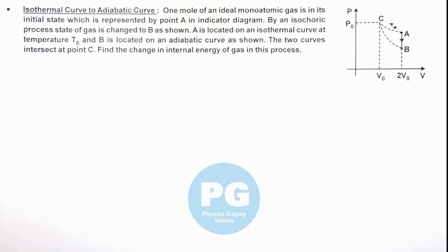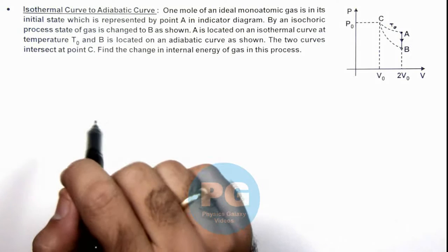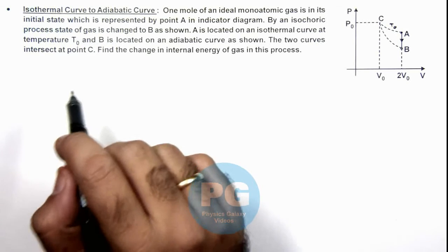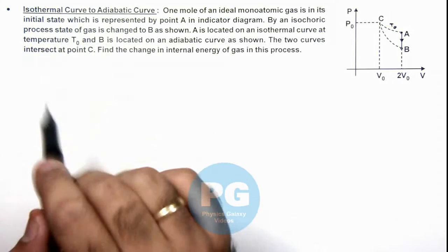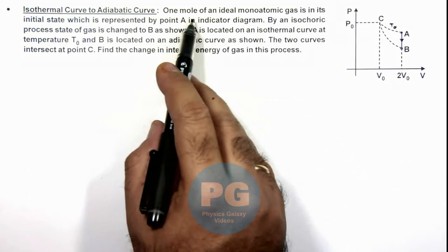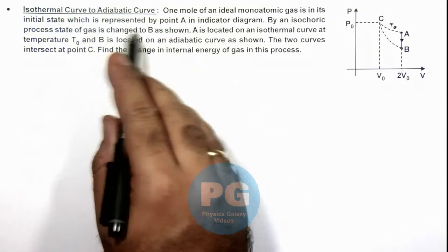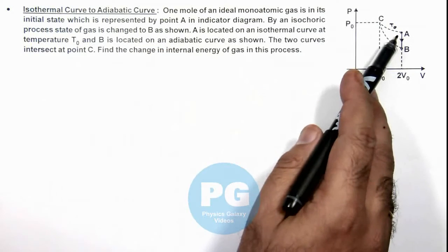In this illustration, we'll analyze a case when a gas changes its state from an isothermal curve to an adiabatic curve. We are given that one mole of an ideal monoatomic gas is in its initial state which is represented by point A in the indicator diagram.